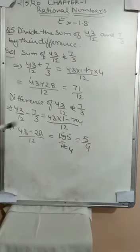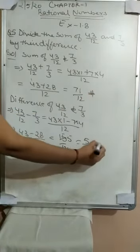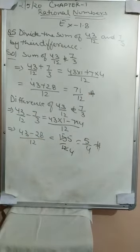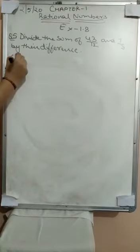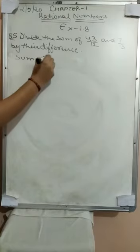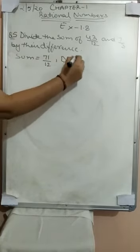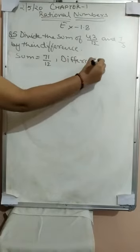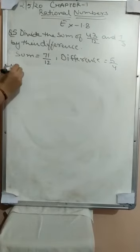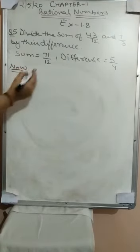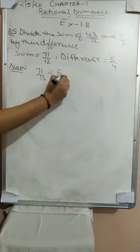Now, what we are going to do is divide these two terms — the sum and the difference. Our sum was 71/12 and our difference was 5/4. So we write: 71/12 divided by 5/4.